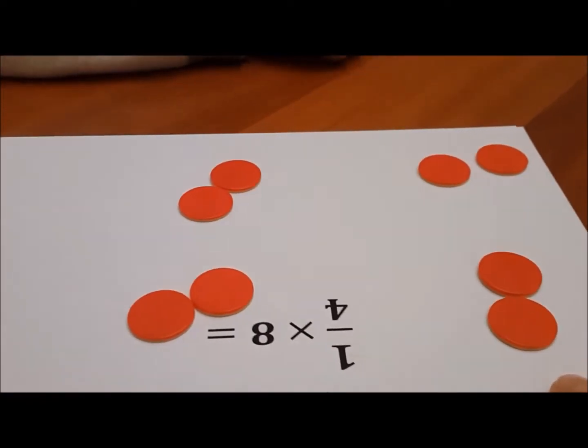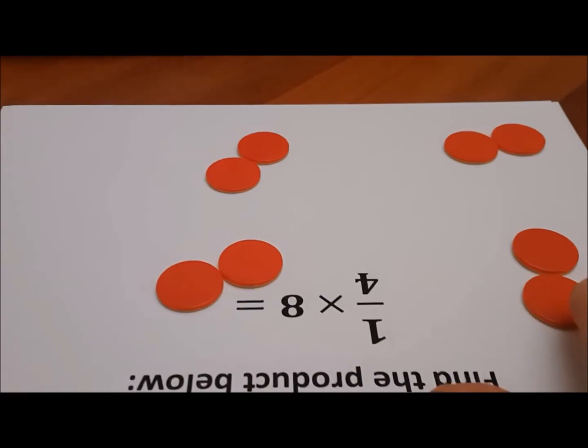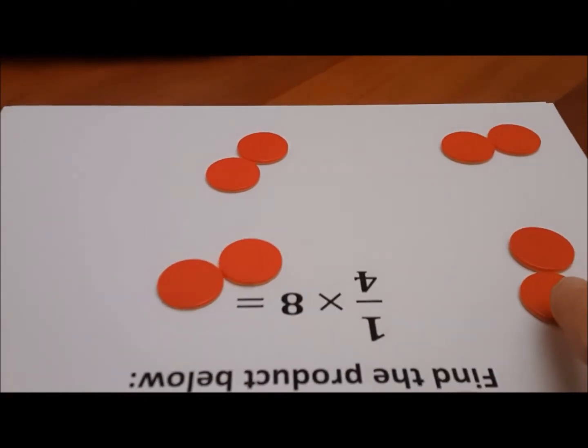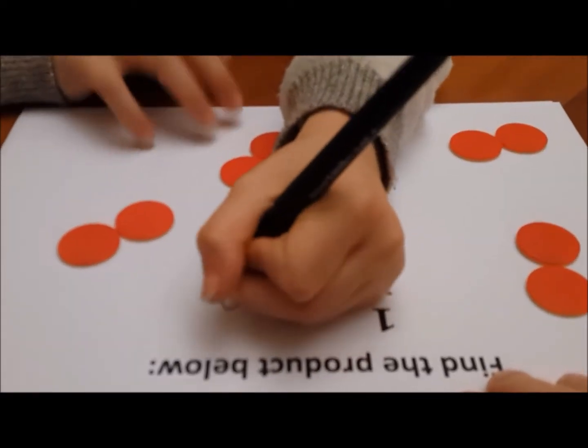So each part has how many chips? Two. So how much is 1 fourth of 8? How many chips are there in one part? Two. Okay, please write a 2 over here.